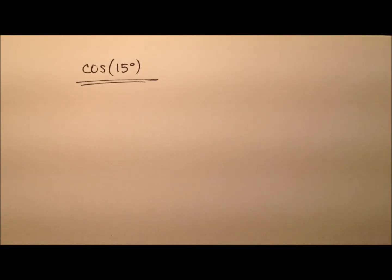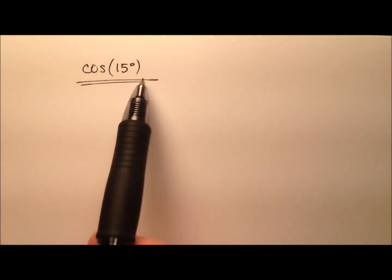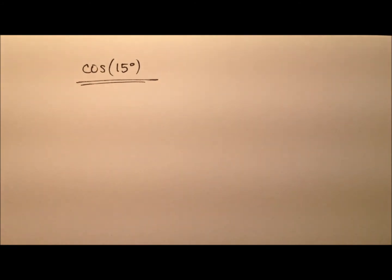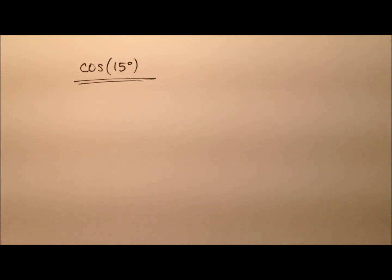In this video, we're going to go ahead and work through to find the exact value for the cosine of 15 degrees, and we're going to do this two different ways. Each way is going to seemingly have a different answer, but then at the end of the video, I'll show you that actually the two expressions we get are indeed the same.